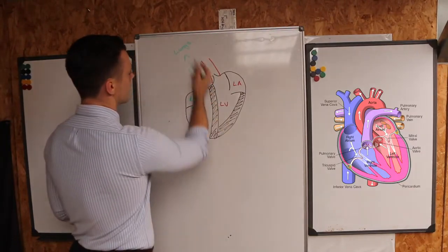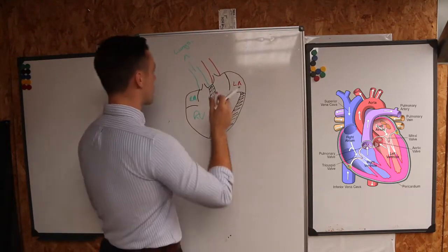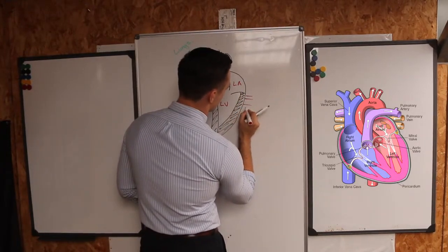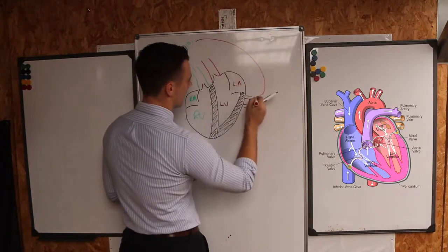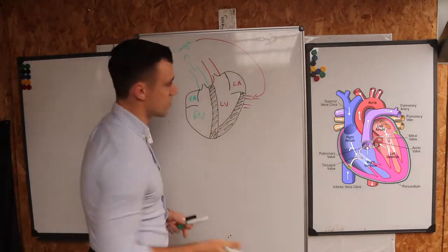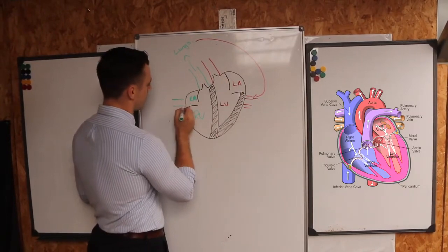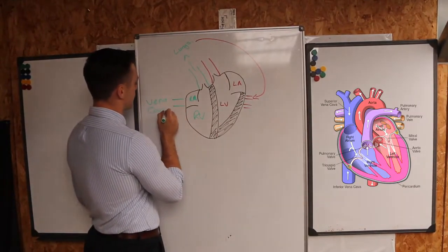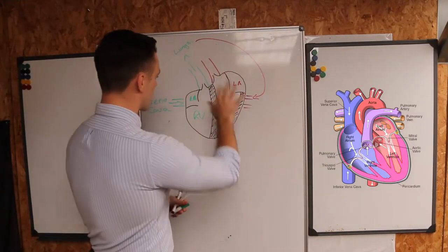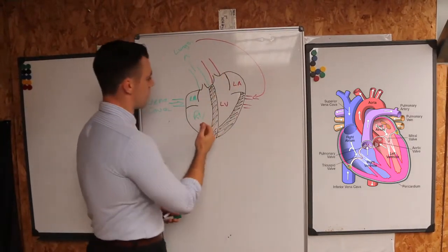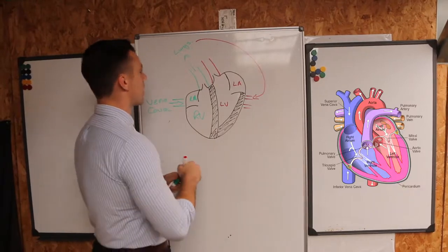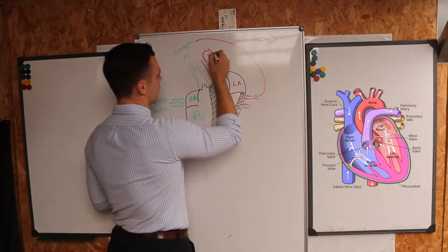Deoxygenated blood leaves the right side of the heart to go to the lungs where it will be oxygenated, and will then return to the left side of the heart via the pulmonary veins. Blood that gets to the right side of the heart comes via the vena cava — there's a superior and inferior portion, but we'll just say vena cava. So we've got our deoxygenated blood coming back from the rest of the body into the right side of the heart.